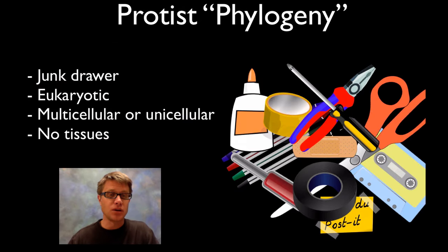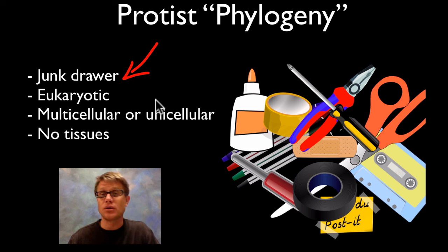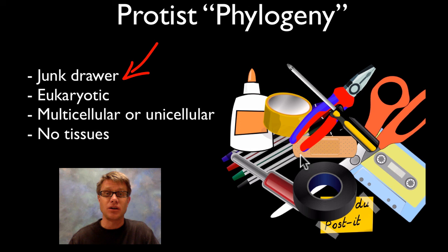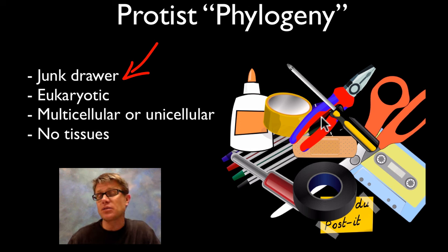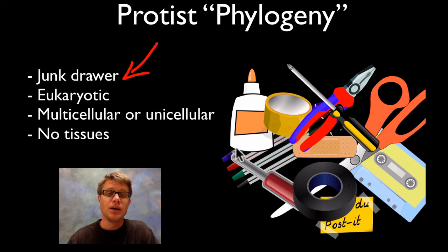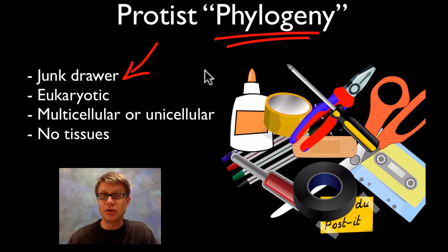We like to think of this as the biological junk drawer. Just like in my house I have a drawer where I have scissors and tape and pens and glue — basically things that don't have a specific place, so we throw them all in that drawer. That's what protists is. And that's why I put quotes around the word phylogeny, in other words evolutionary history, because we don't really know who's related to whom.